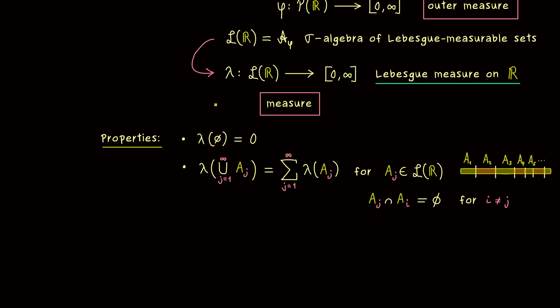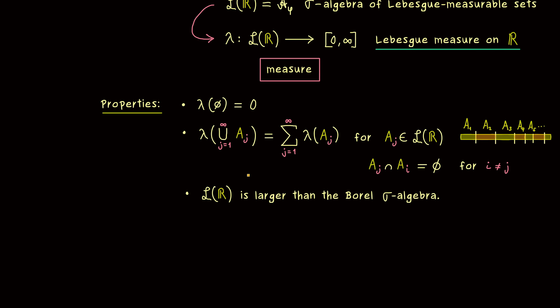Okay, so these things are just the general properties a measure has. But for the Lebesgue measure, we have even more. First of all, we can state that the sigma algebra of Lebesgue measurable sets is bigger than the common Borel sigma algebra. So in particular, the Borel sigma algebra is contained in L of R. So if you don't know the Borel sigma algebra, it's not a problem at all. But you should know that all open sets in R are included there.